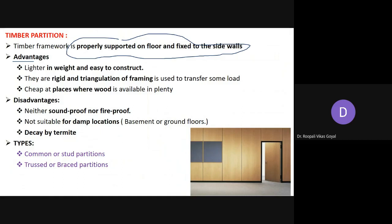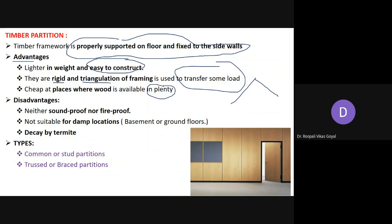The advantages of timber partition: first, it is light in weight and easy to construct — very advantageous from both weight and construction points of view. They are rigid, and the triangulation of framing is used to transfer load. It is also cheap where timber is available in plenty, such as in mountainous regions, making it very economical.